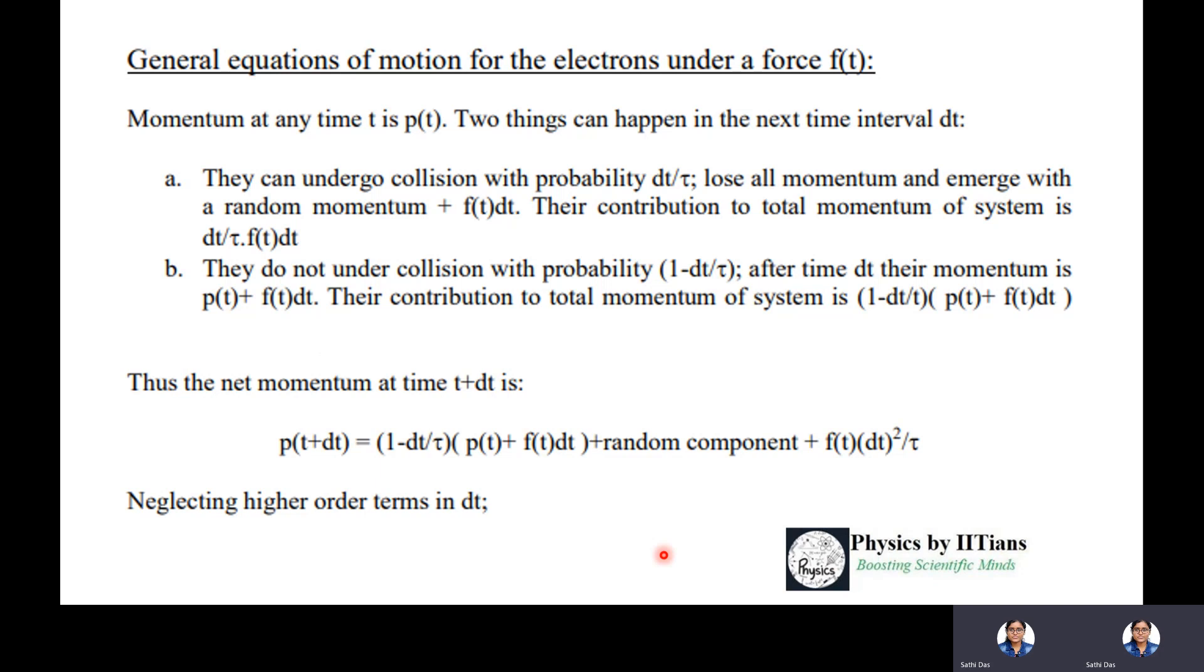Let's come back to the discussion. We have established Ohm's law in the metal case. Now let's study the general equation of motion for electrons under a force F(t). Suppose the momentum of the electron at time t is p(t). Two things can happen in the next time interval dt: they can undergo collision with probability dt/τ and lose all momentum, emerging with random momentum, contributing dt/τ · F(t)dt. Or they do not undergo collision with probability 1 - dt/τ, and after time dt their momentum is p(t) + F(t)dt, contributing (1 - dt/τ)[p(t) + F(t)dt] to total momentum.